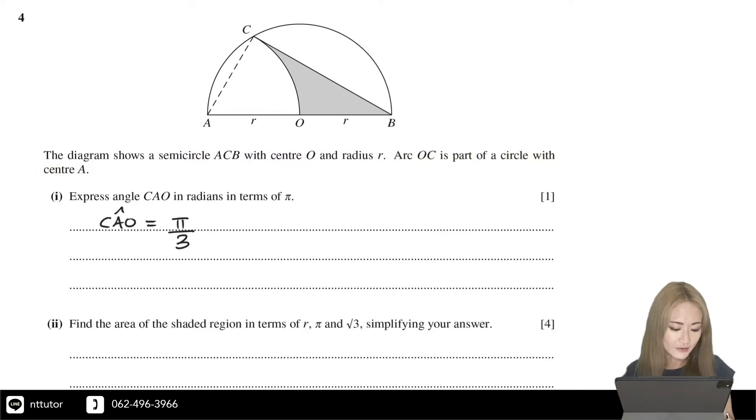Part 2: Find the area of the shaded region in terms of R, π, and root 3, simplifying your answer.